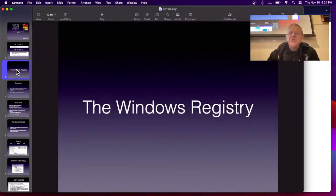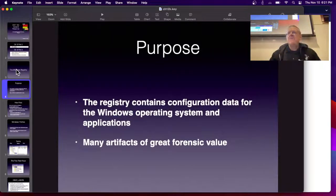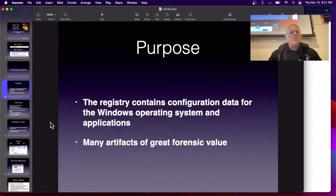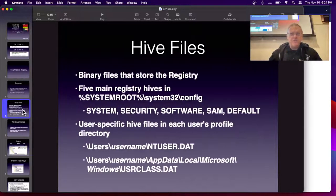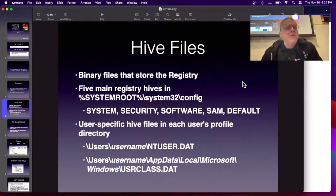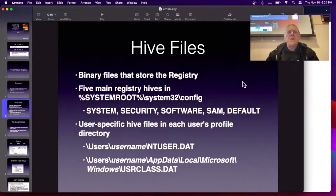The Windows Registry replaces the text files used by MS-DOS to contain settings like win.ini and autoexec.bat. This is all the configuration data for the Windows operating system and applications. It's a large binary database and a reservoir of an enormous amount of information useful for forensics. In true Microsoft form, it is not stored in any logical way. It is not even contained in one file — not even in any fixed number of files. It's files scattered all over the place.